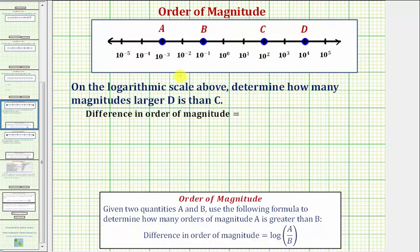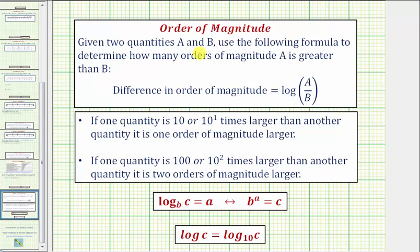Let's begin by reviewing how we determine the order of magnitude. If we're given quantities a and b, we use the following formula to determine how many orders of magnitude a is greater than b. The difference in order of magnitude is equal to the common log of a divided by b. To understand the meaning of this, if one quantity is ten — or ten to the first — times larger than another quantity, it is one order of magnitude larger.